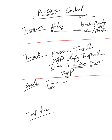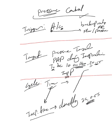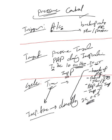The cycle in pressure control is time-based. We have to tell the ventilator how many seconds we need to spend in inspiration. That means we directly set the inspiratory time — is it one second, 0.5 seconds? Whatever we need, we tell the ventilator. So the inspiratory time is what cycles the breath.